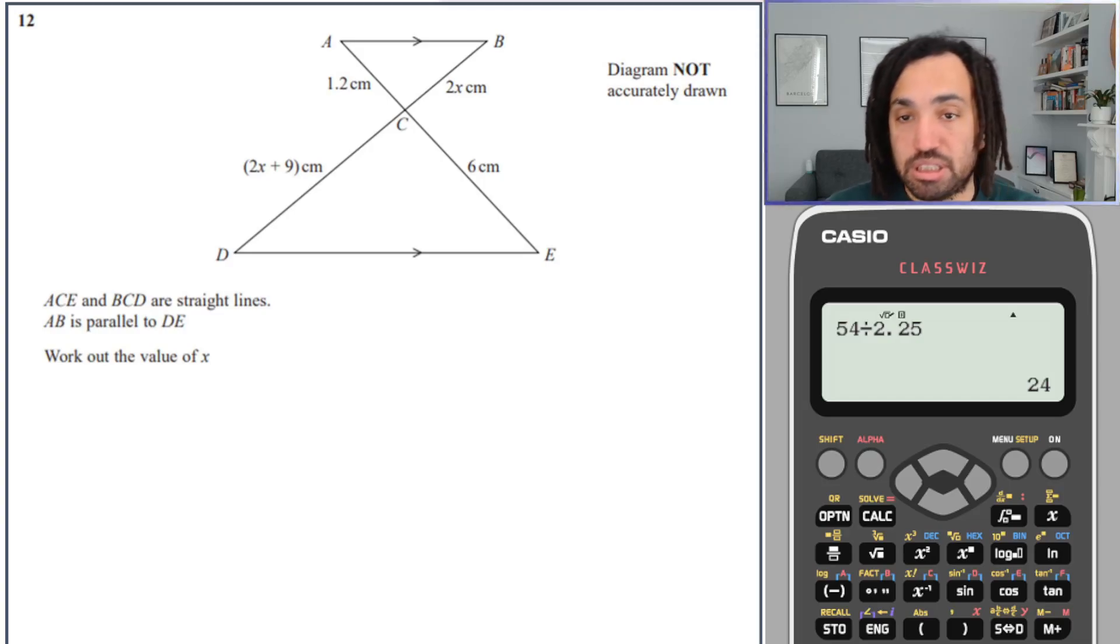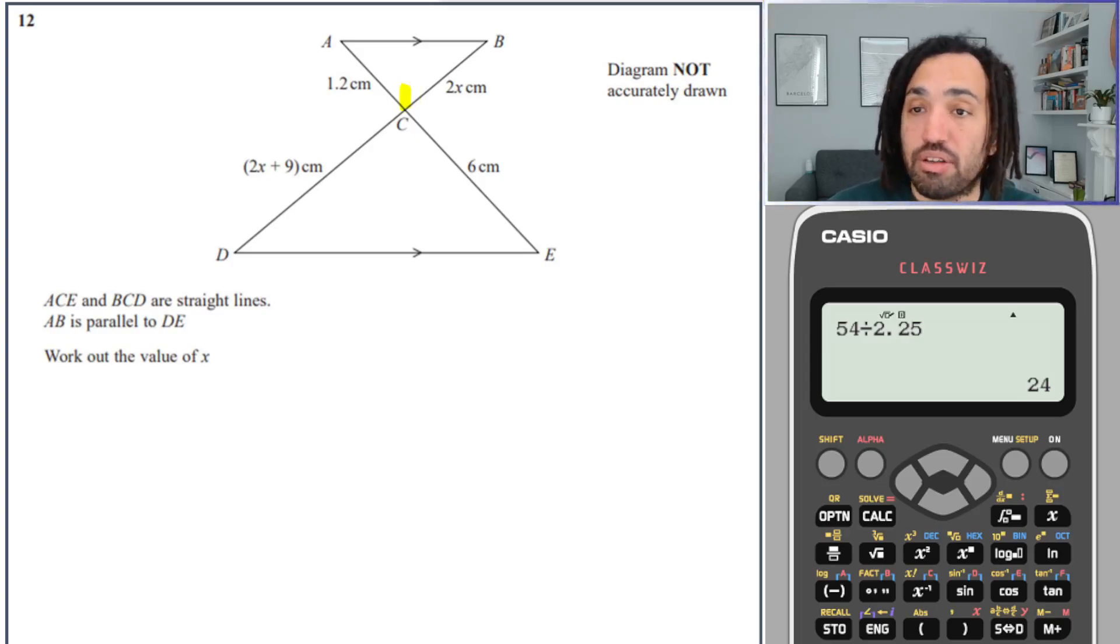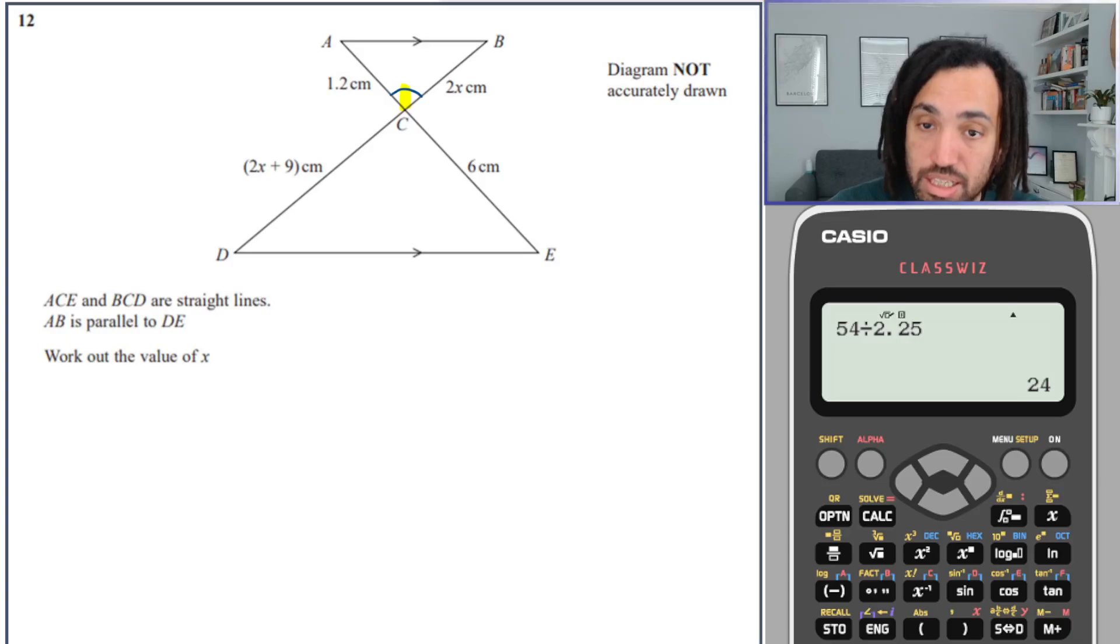Next question, slightly harder this one. We have two similar triangles but it's less obvious to see. So the first thing I'll do is just highlight this angle here, this yellow angle. Now that angle is exactly the same as this angle, and we know that because of vertically opposite angles are equal.